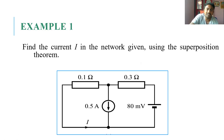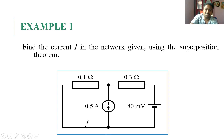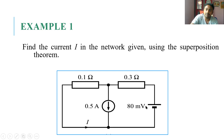In my presentation I have three different examples. In the first example, the network has two sources: a 0.5 A current source and an 80 mV voltage source. My objective is to find the current through a specific branch in the given direction. To apply the Superposition Theorem, I make one source active and the other inactive. When the 0.5 A current source is active, the 80 mV voltage source is inactive, and vice versa.